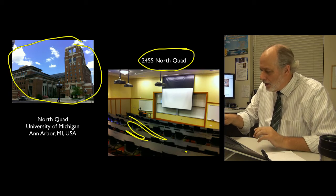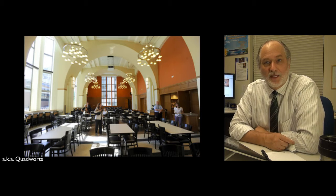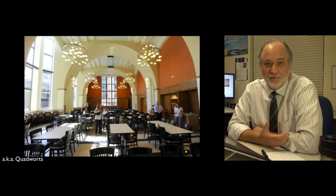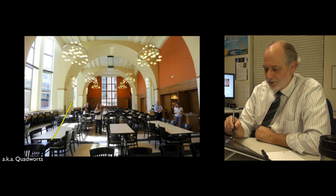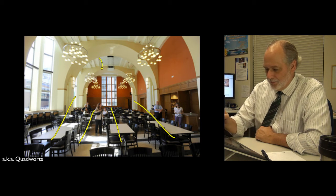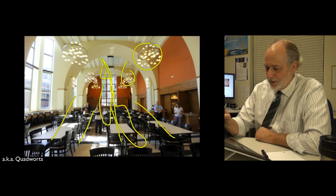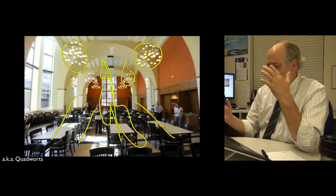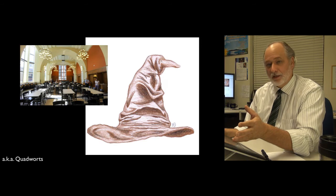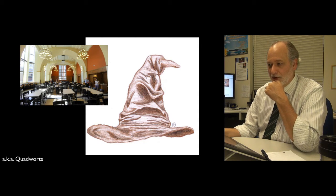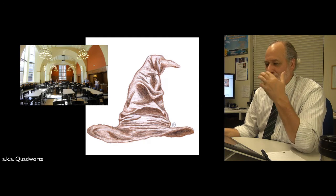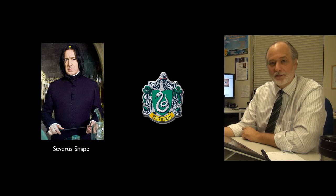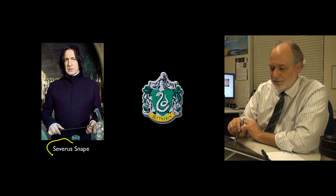All good college campuses need a nickname for every building. The nickname for this building is Quadworts, because I claim it was built by someone who was a big fan of Harry Potter. Our cafeteria looks like you can see all the houses at their four tables, snowy owls come flying back and forth to deliver the mail, and the chandeliers - this is just a total rip-off of Harry Potter. It's beautiful and fun, and students think it's really great.